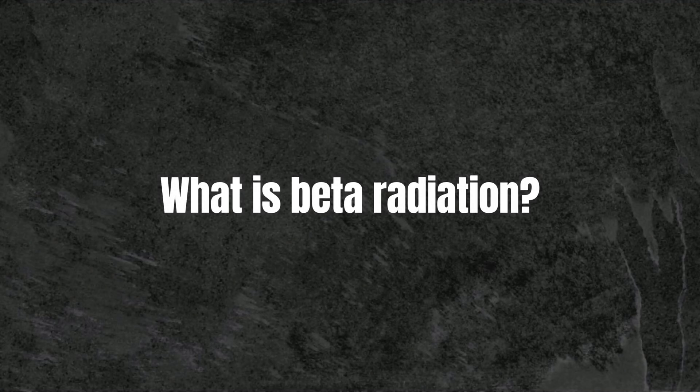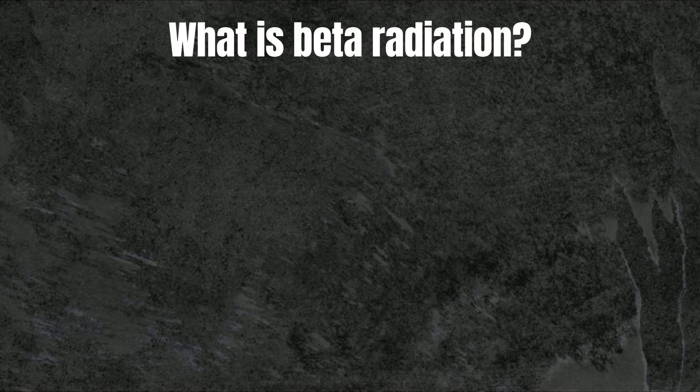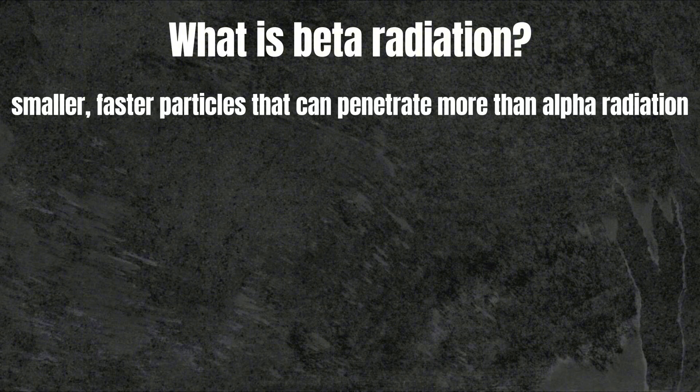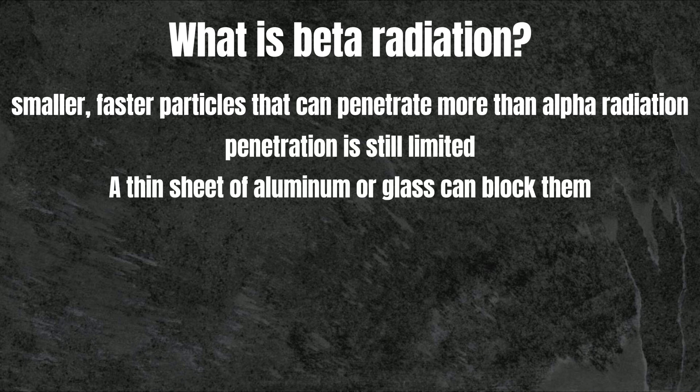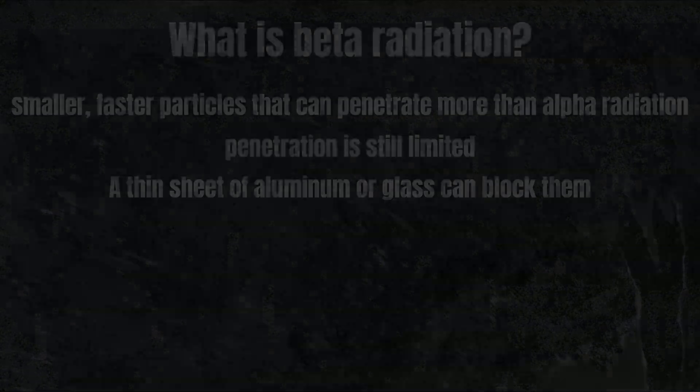What is beta radiation? Beta radiation consists of smaller, faster particles that can penetrate more than alpha radiation, but their penetration is still limited. A thin sheet of aluminum or glass can block them.